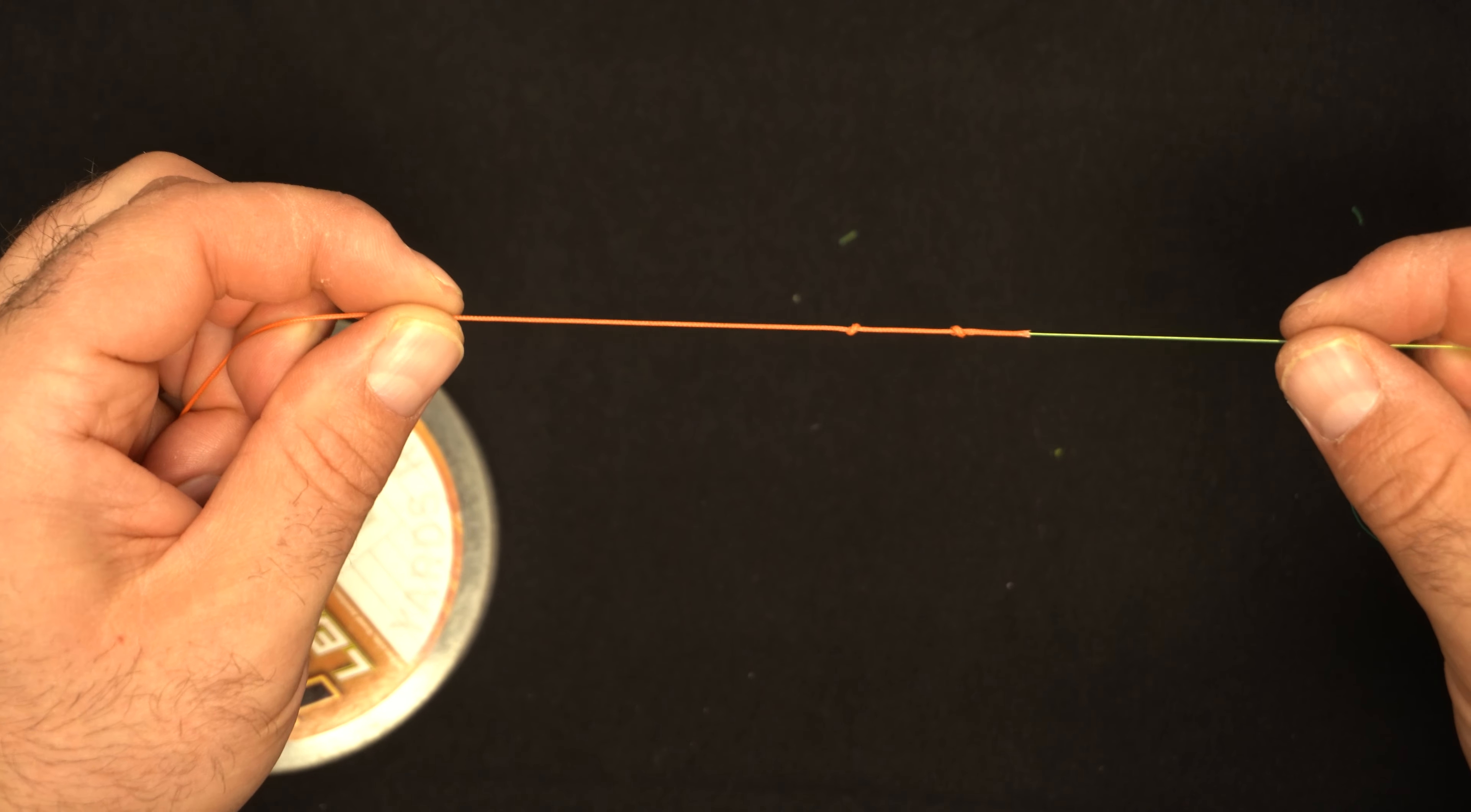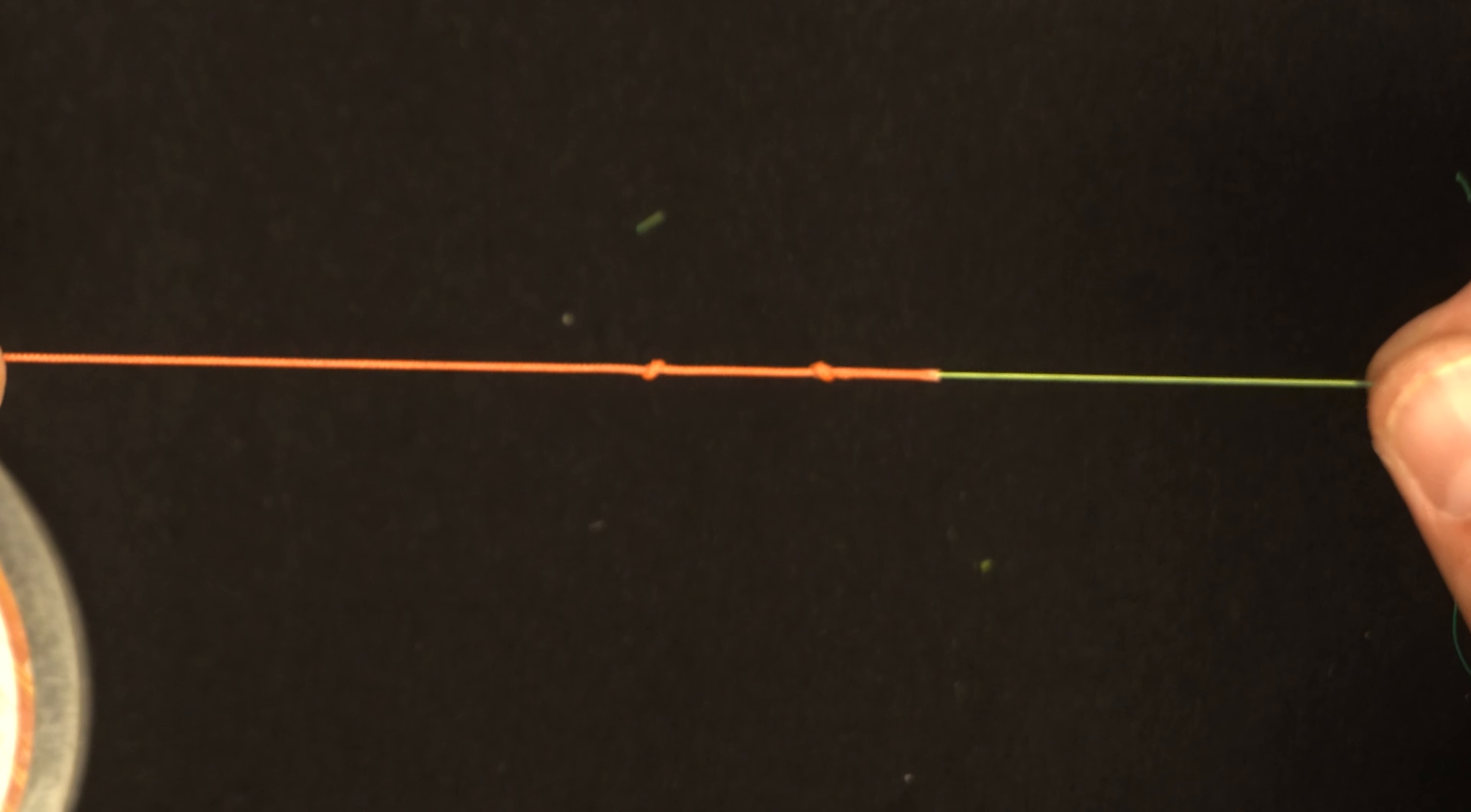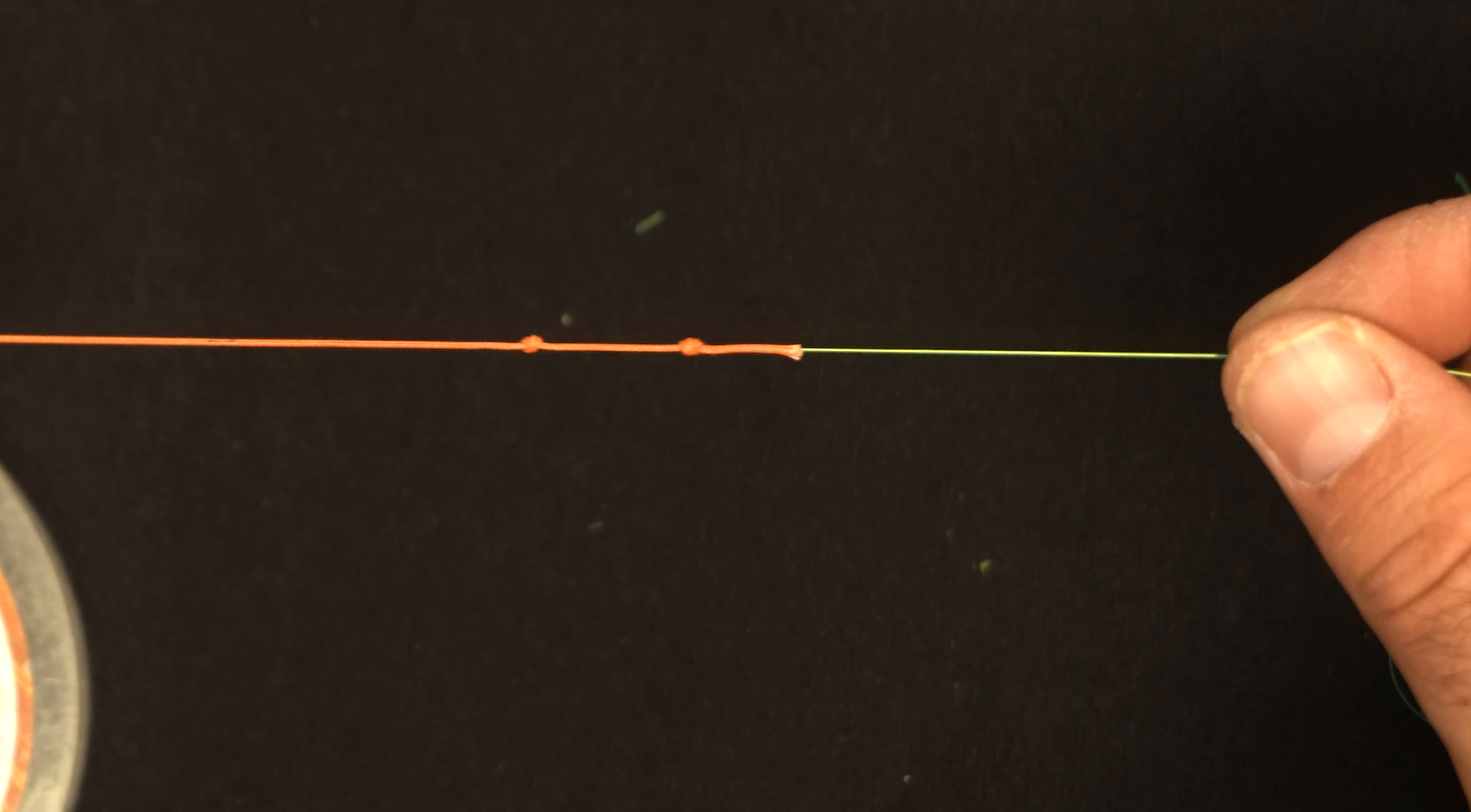There you go. That's how you join lead core to either a braid or a monofilament line. That's it.